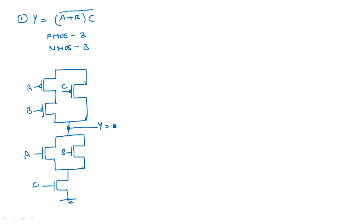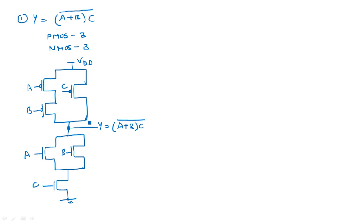The output taken from this center node gives y = (A + B·C)' in complemented form, with VDD at the top. Three pMOS transistors have A and B in series, and C in parallel — realizing A + B·C. The nMOS transistors have A and B in parallel, and C in series — the dual network.